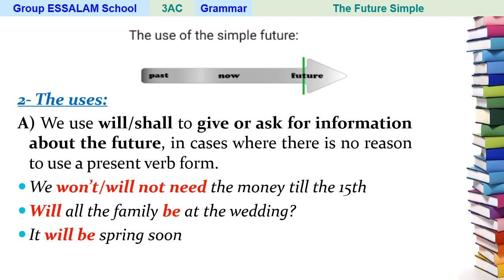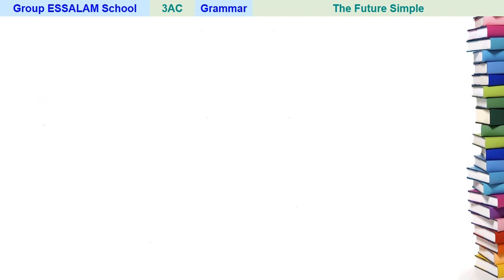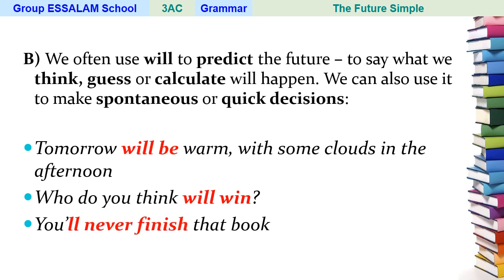We use 'will' or 'shall' to give or ask for information about the future, in cases where there is no reason to use the present. For example: 'We will not need the money until the 15th' (negative form), 'Will all the family be invited?' (question form), and 'It will be spring soon' (positive form).